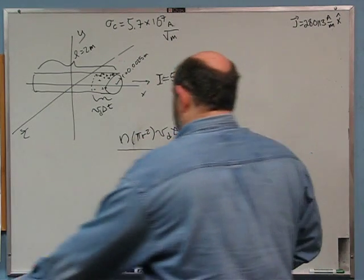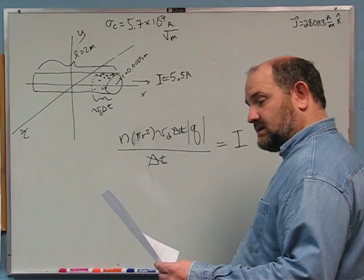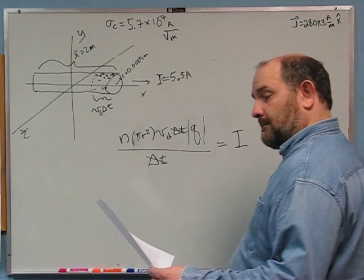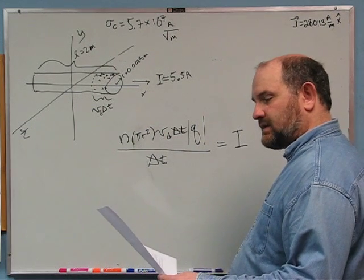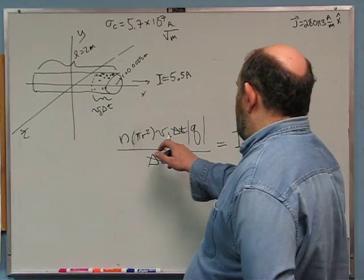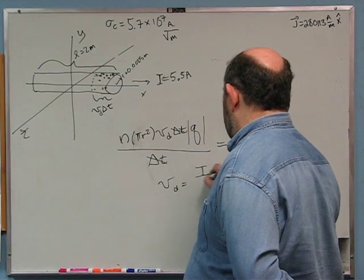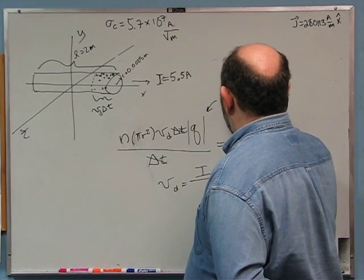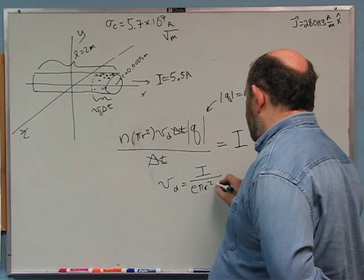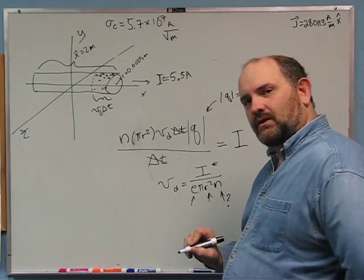I can cancel the delta t's. I'm after v_d. The drift velocity is v_d = I divided by the absolute value of q times pi r squared times n. The absolute value of q for an electron is just e, the fundamental charge. I have I, I have this number, but I need n — the number density of electrons. I didn't give you that. So I'm going to have to make an assumption.